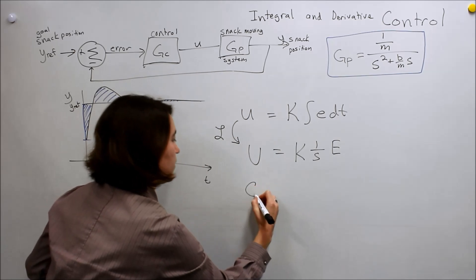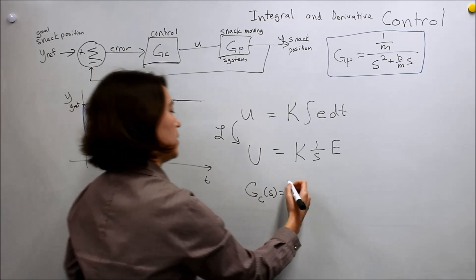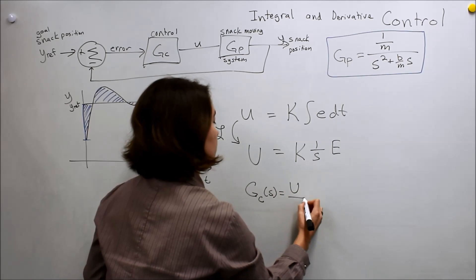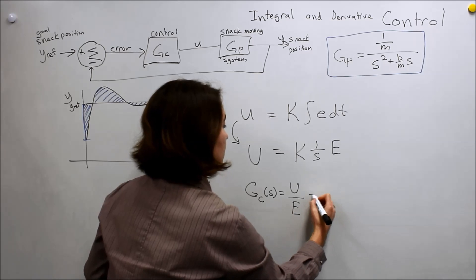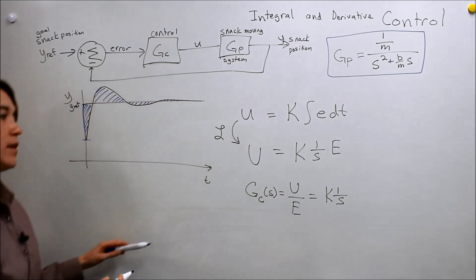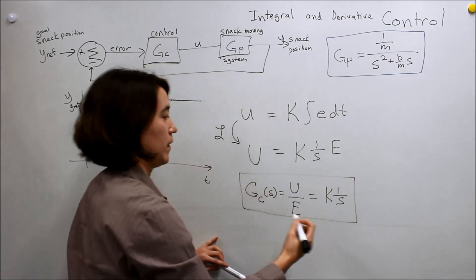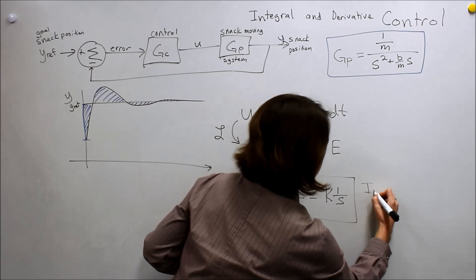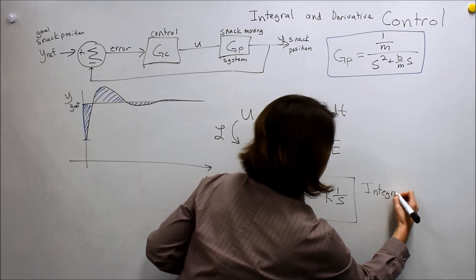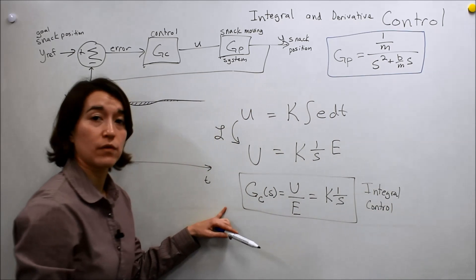When we put this into our control form, we want the output U over the input E, and so we simply get K1 over S. So this is our basic control for integral control, this is the transfer function for that.